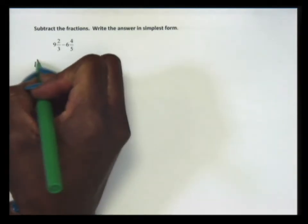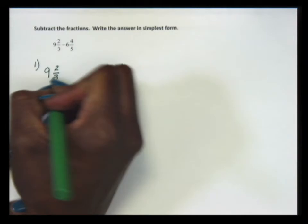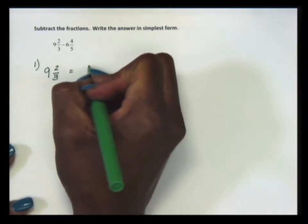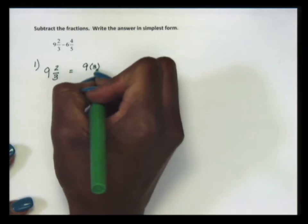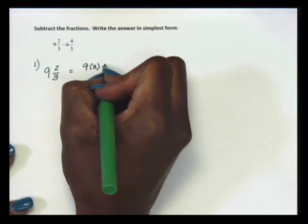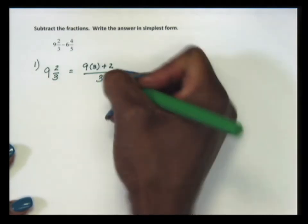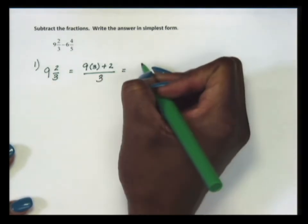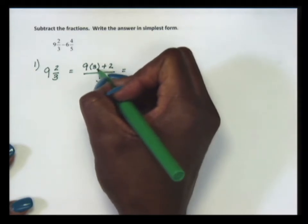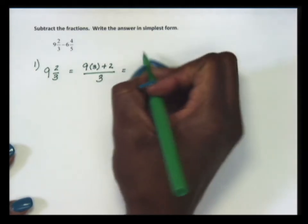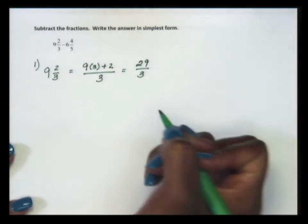To change 9 and 2 thirds to an improper fraction, we'll multiply the whole number times the denominator, 3, and then we'll add 2. We're going to keep the original denominator of 3. Going back to order of operations, we have 9 times 3 is 27. 27 plus 2 is 29 over the original denominator of 3.